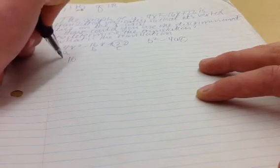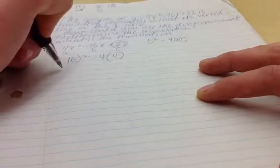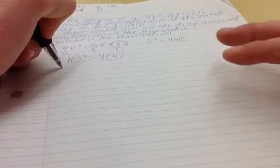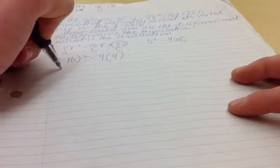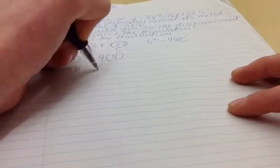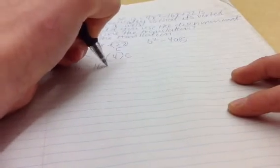So basically, we have negative 16 squared minus 4 times 4. So that is, oops, that's 256 minus 16c.